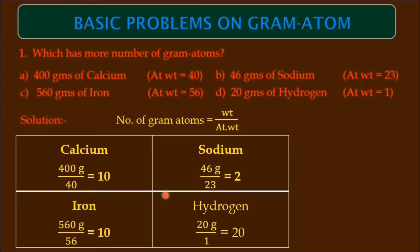Here, we have 10, 2, 10, 20 for calcium, sodium, iron, and hydrogen. Among the four, which has more number of gram atoms? Hydrogen has more number of gram atoms - 20. The answer is D, option D.